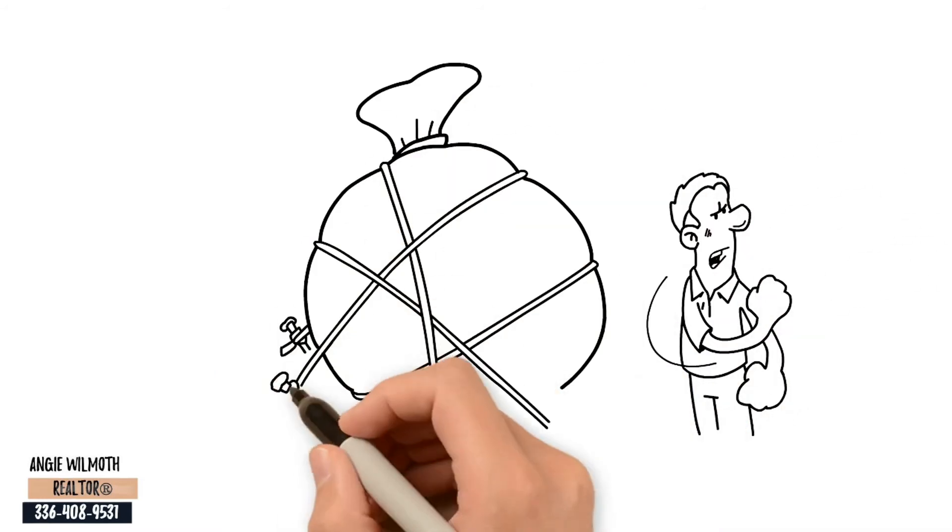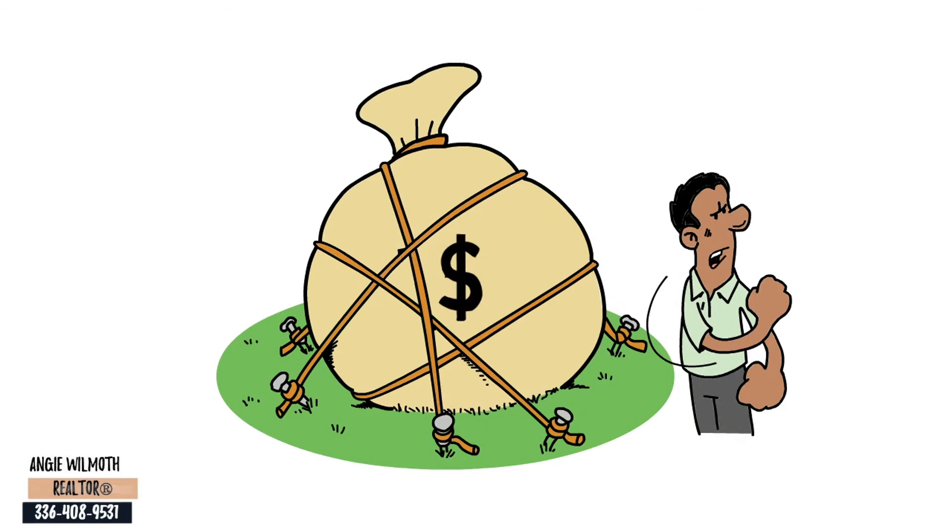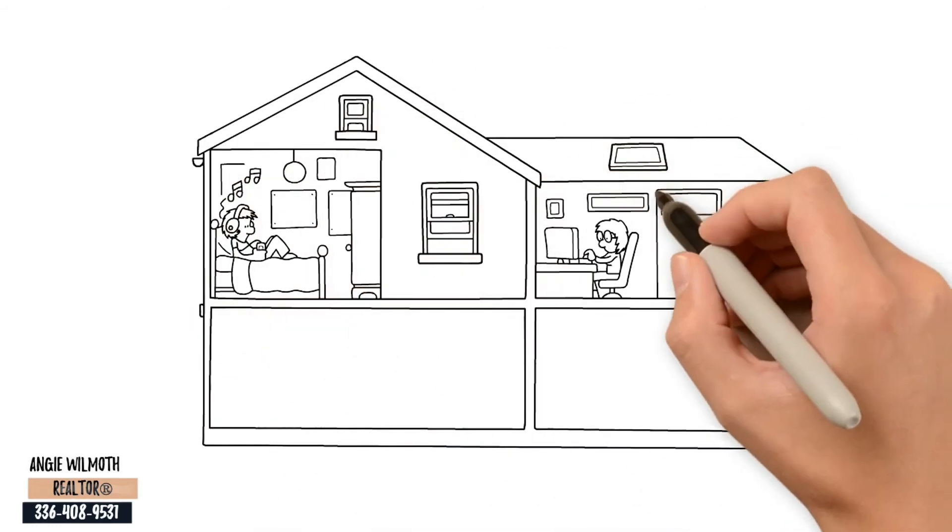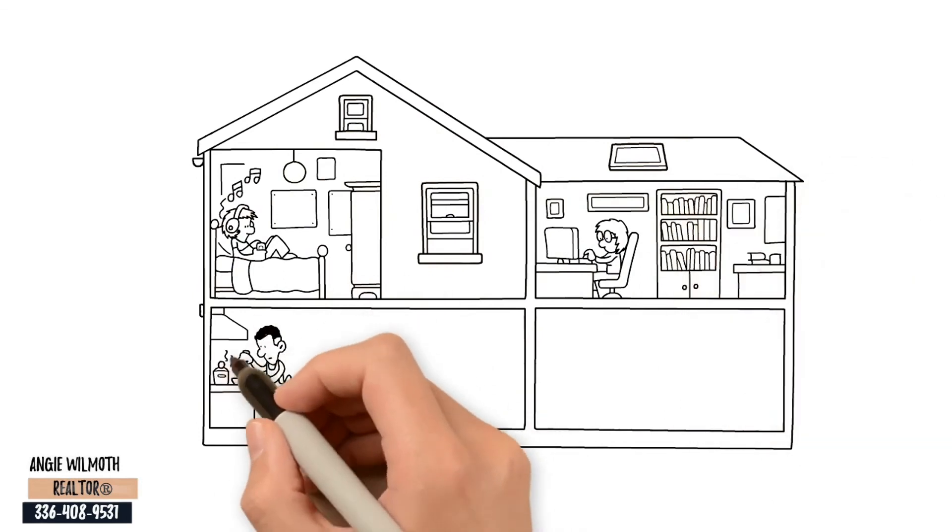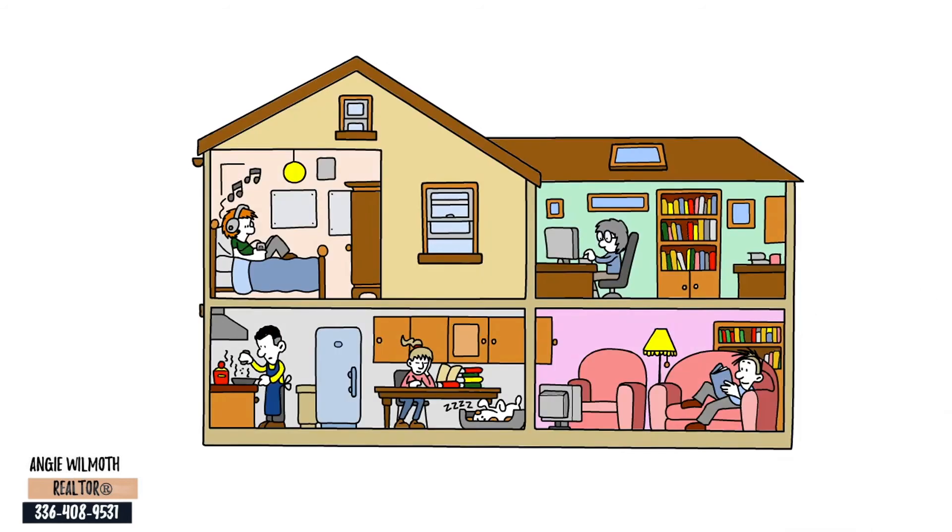There are options. Some people secure a bridge loan that's paid back when their home sells. Others negotiate to sell, but then rent their current home back from the buyer for a period of time. Some people move in with family members or rent until they find their next house.